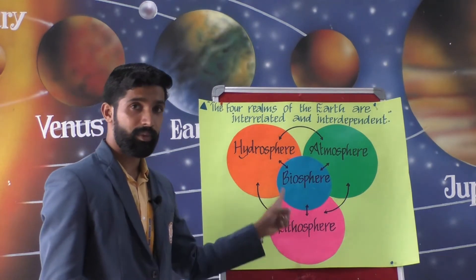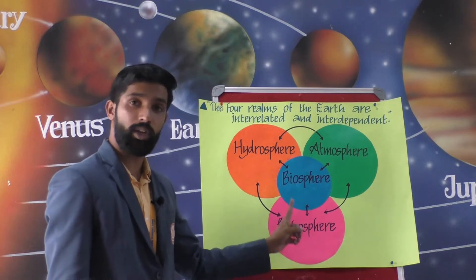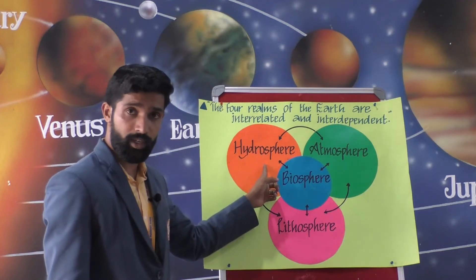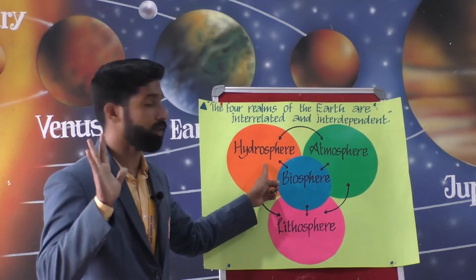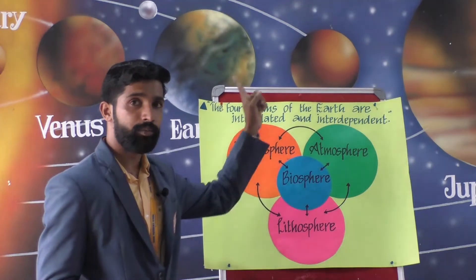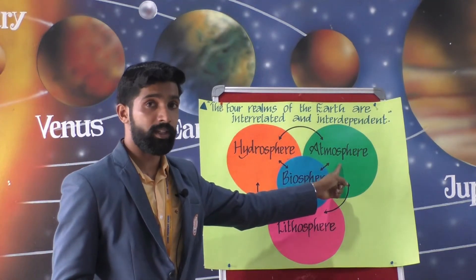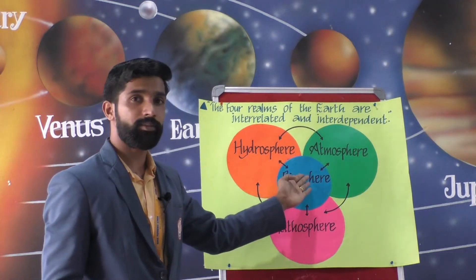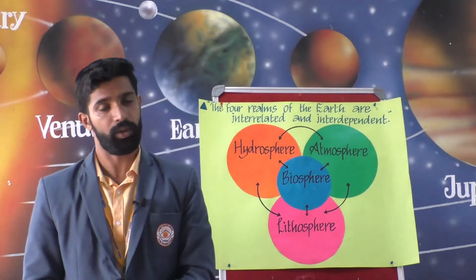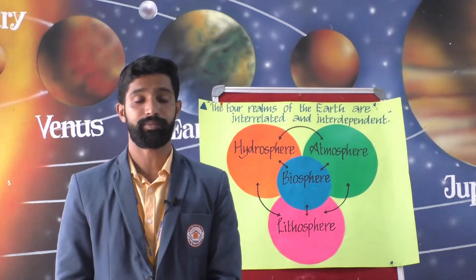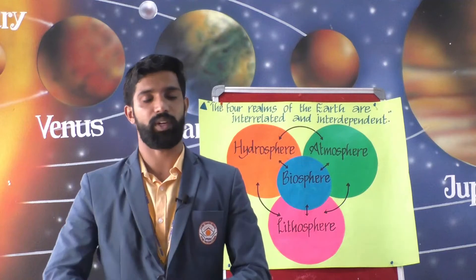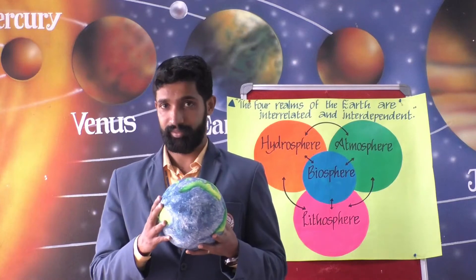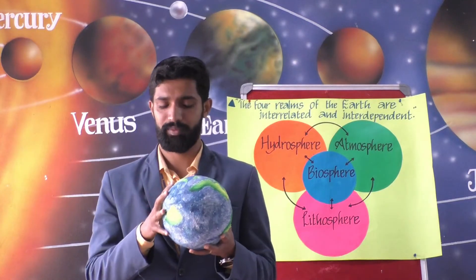The solid portion of the earth is known as the lithosphere. Water bodies on earth make up the hydrosphere, a blanket of air around us is the atmosphere, and the living world is the biosphere. The outermost solid layer of the earth is called the lithosphere.